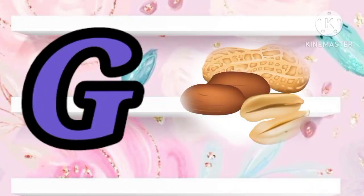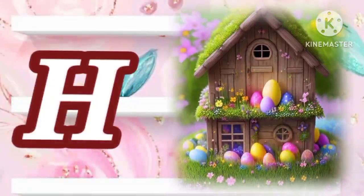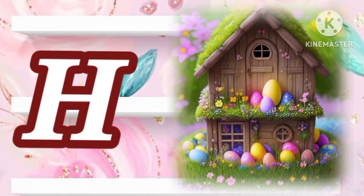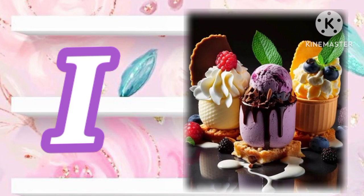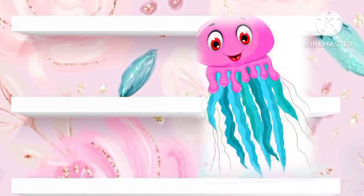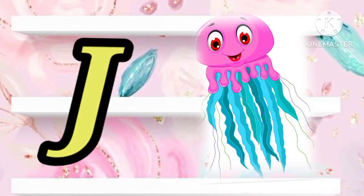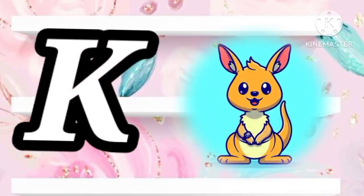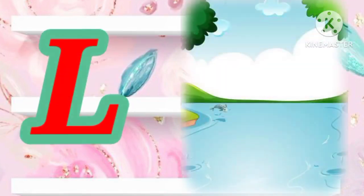G for donut, H for hut, I for ice cream, J for jellyfish, K for kangaroo, L for lake.